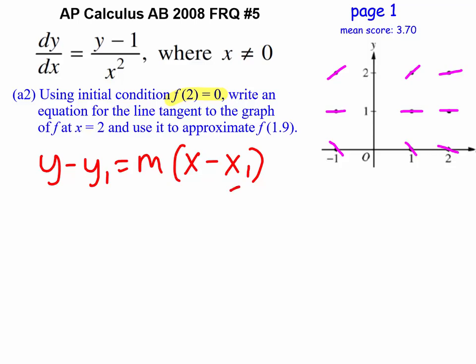The x value is 2, the given y value is 0, and as far as the m value goes, we know that a derivative is what will give us the slope. So let's look to the original derivative equation that we were given. We'll plug in those same x and y values, x equals 2, and y equals 0.